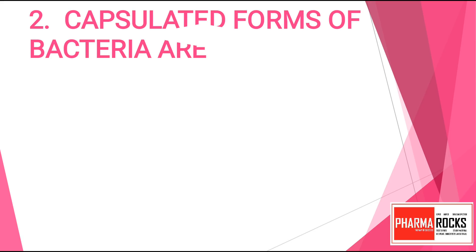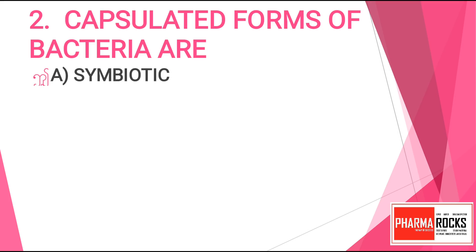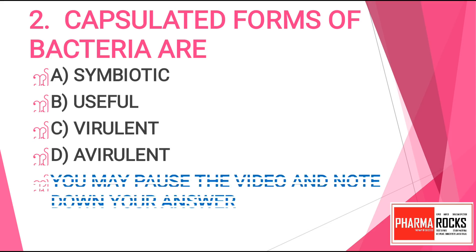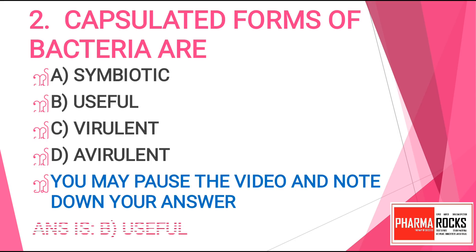Question number 2. Capsulated forms of bacteria are: Option A. Symbiotic. Option B. Useful. Option C. Virulent. Option D. Avirulent. You may pause the video and note down your answer. The correct answer for this question is Option B. Useful.